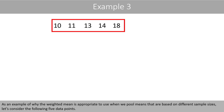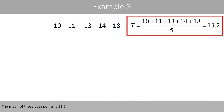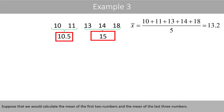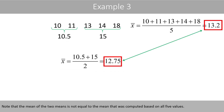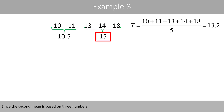As an example of why the weighted mean is appropriate when pooling means based on different sample sizes, consider the following five data points. The mean of these data points is 13.2. Suppose that we calculate the mean of the first two numbers and the mean of the last three numbers. If we calculate the mean of these two means, we get a value of 12.75. Note that the mean of the two means is not equal to the mean of all five values, since the second mean is based on three numbers whereas the first mean is based on only two numbers.